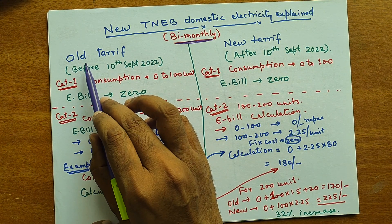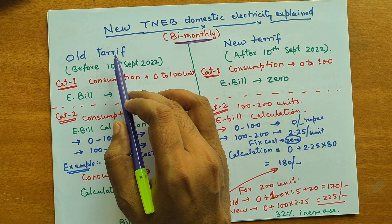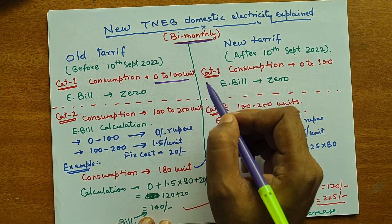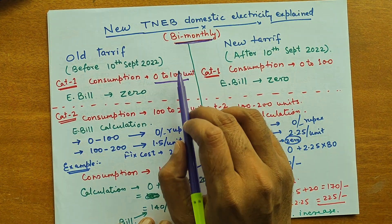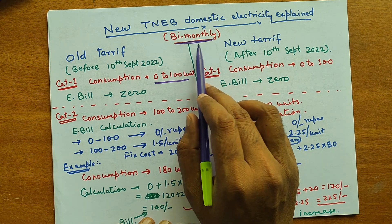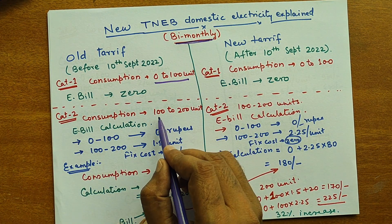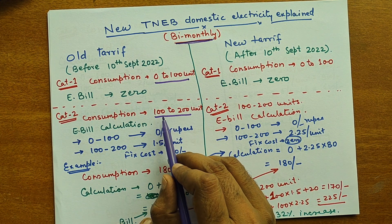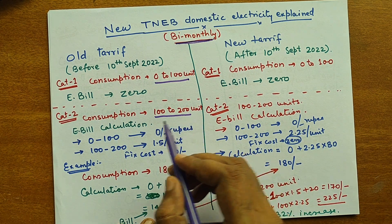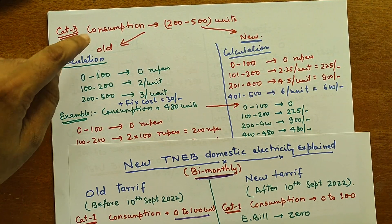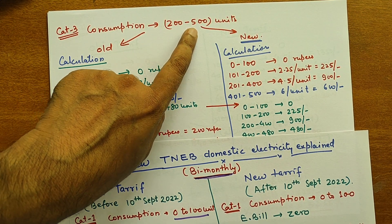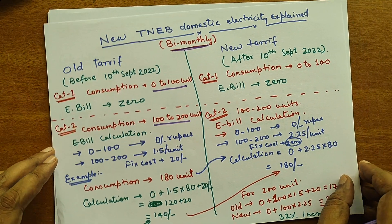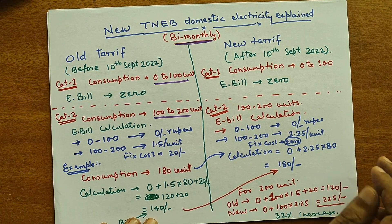The old tariff can be divided into four categories. Category one is 0 to 100 unit consumption — those people using only within 100 units in two months. The second category is those who use less than 200 but more than 100 units in two months. The third category is 200 to 500 units, and the fourth is people using above 500 units. That is the old tariff system.